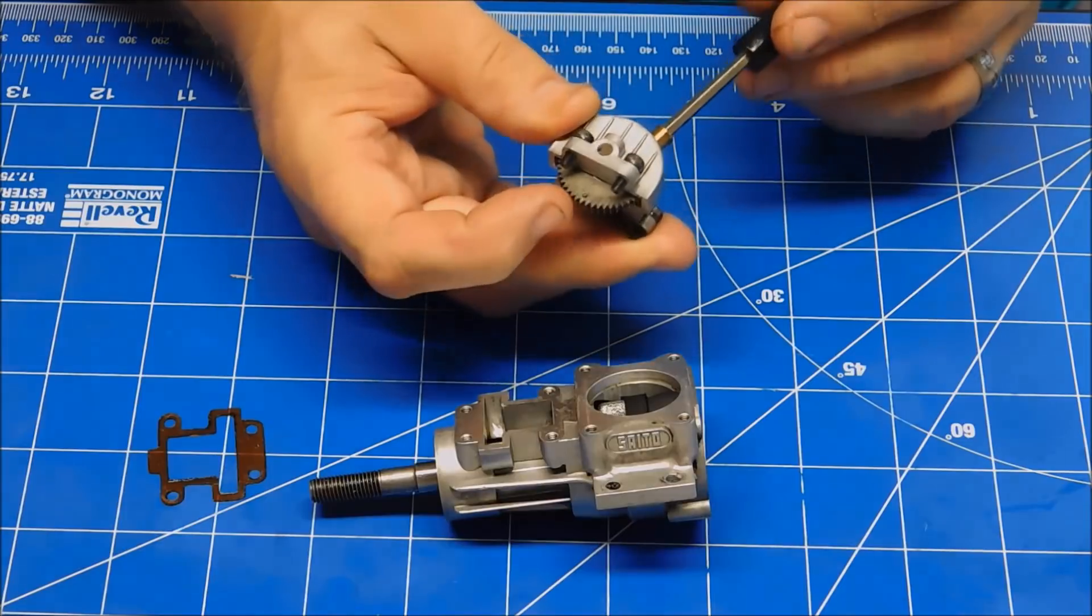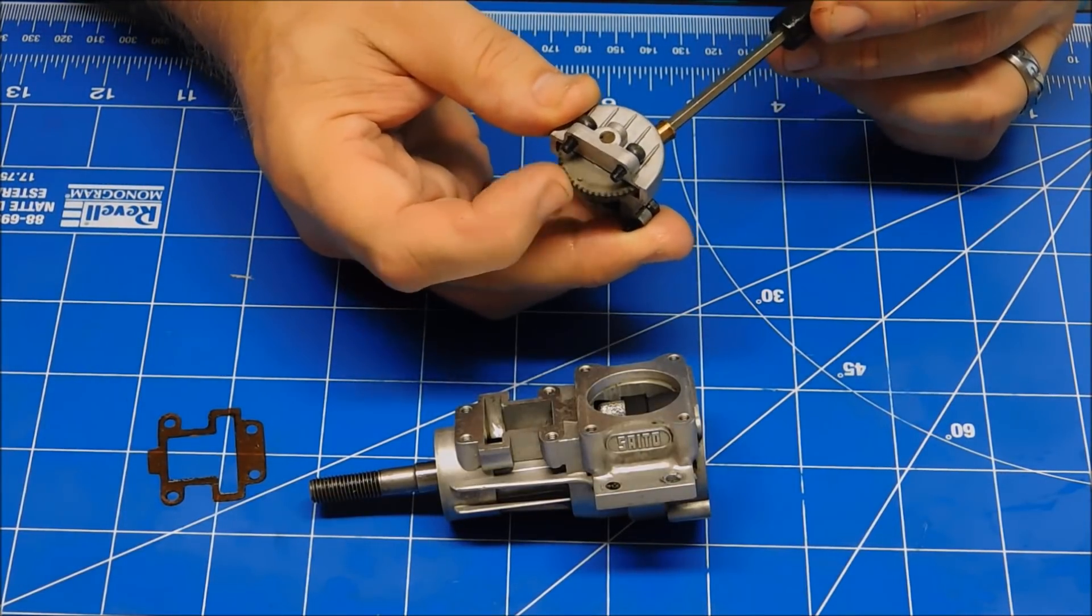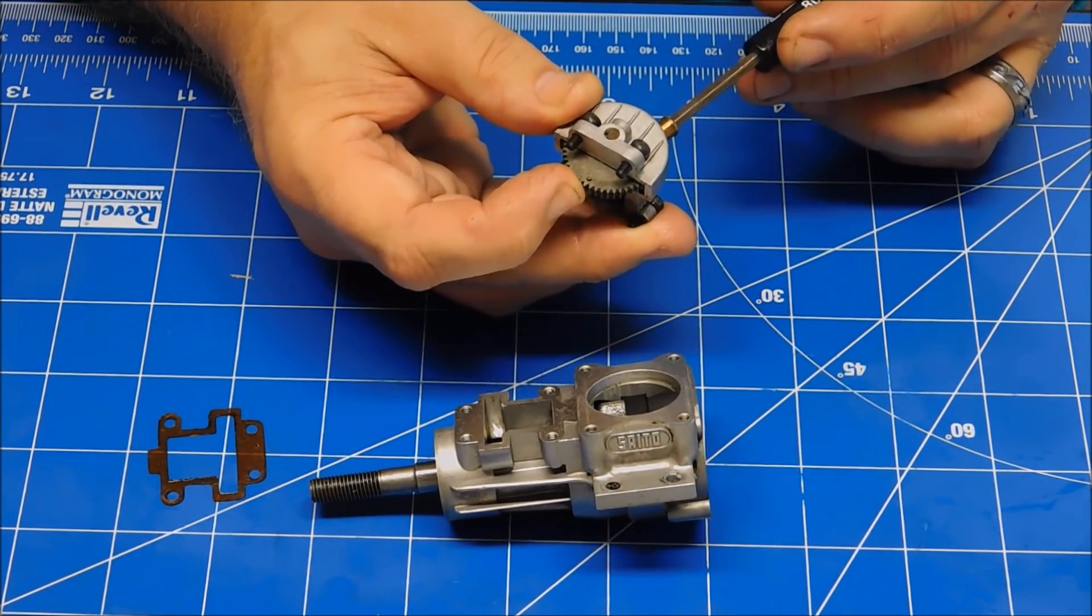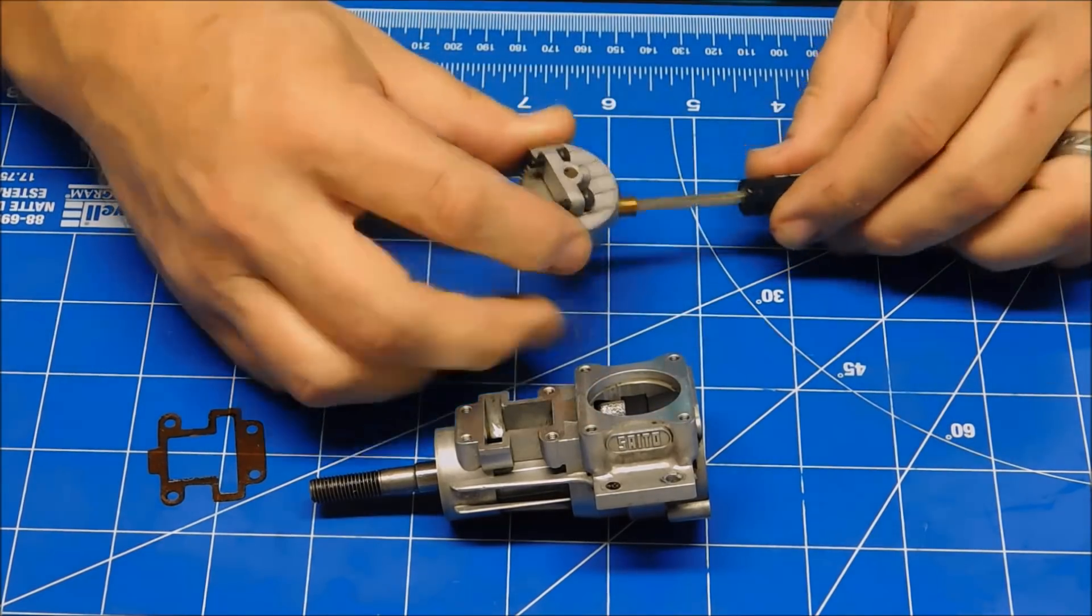So I just use that and engage it. See, if I pull it out I can rotate this gear, and then it just drops right into place and now that gear can't turn.